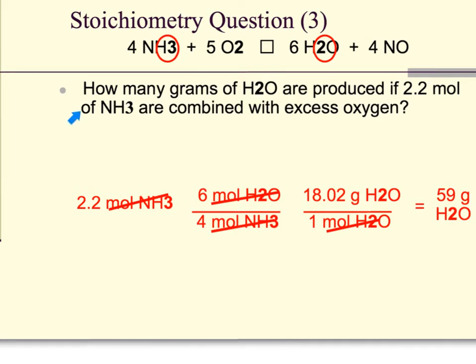On this problem, we have a balanced chemical equation. We are asked how many grams of H2O are produced if 2.2 moles of NH3 are combined with excess oxygen. Now, note that the two chemicals mentioned in our problem are going to be H2O and NH3. Therefore, one of those chemicals will be chemical A and one will be chemical B.